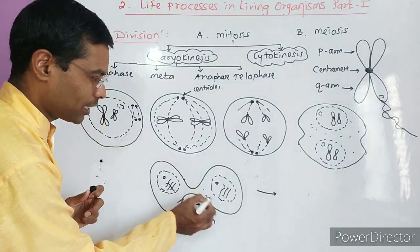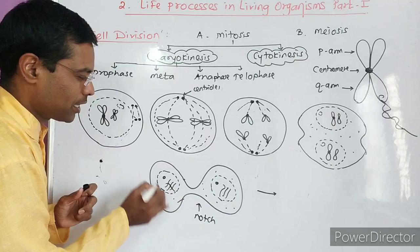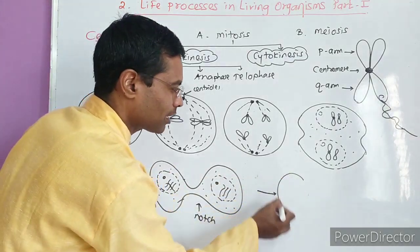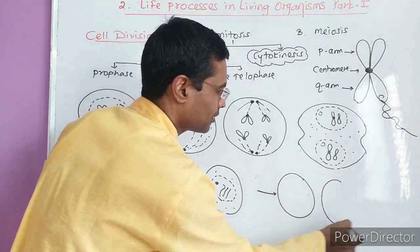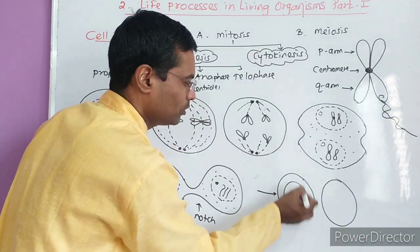Cytokinesis starts after telophase. The notch deepens and the two cells start to separate. Cytoplasm separates. Finally the cells are formed - two cells are formed. How many cells are formed? Two cells are formed.